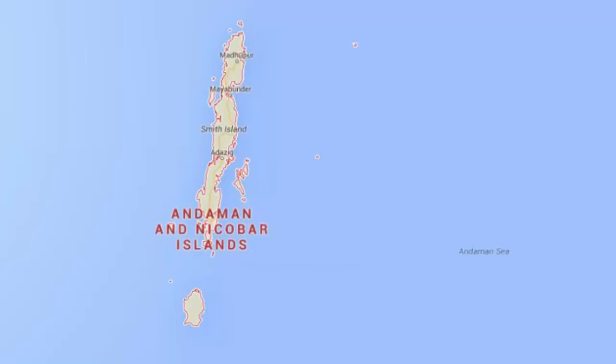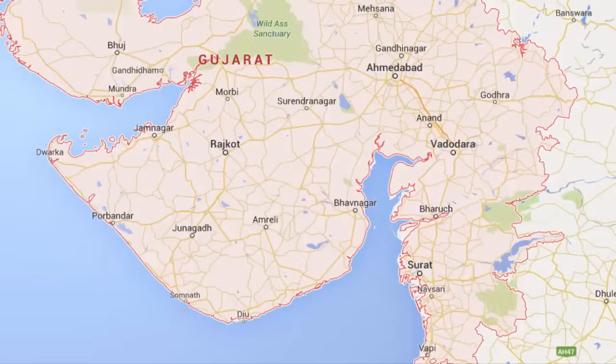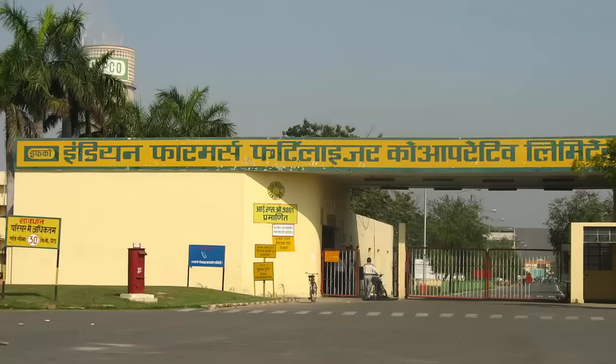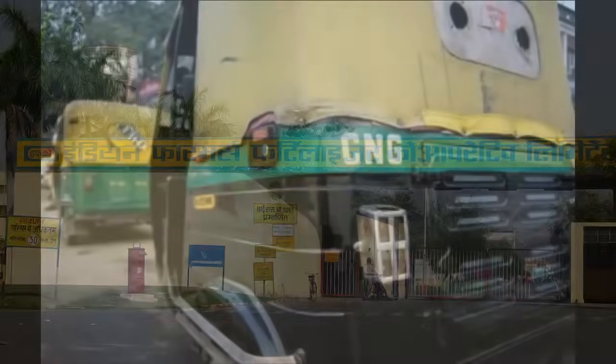Large reserves of natural gas in India are found in Krishna Godavari Basin, Bombay High, Andaman and Nicobar Islands, and Gulf of Cambay. Natural gas is used heavily in fertilizer industries. And compressed natural gas is used for vehicles instead of petroleum.